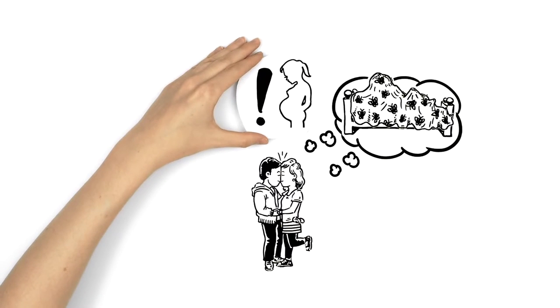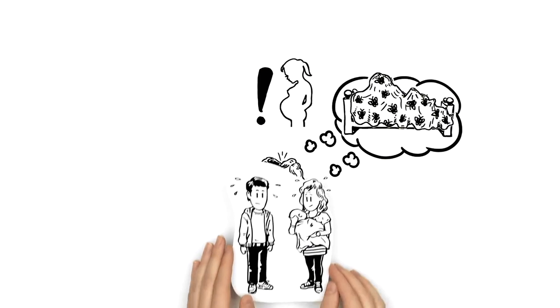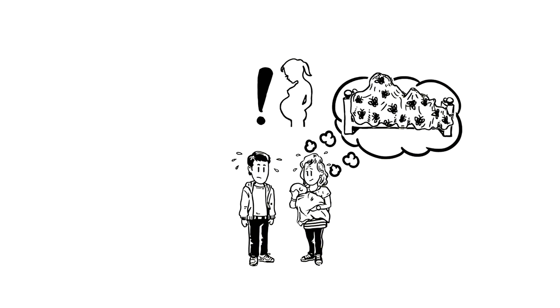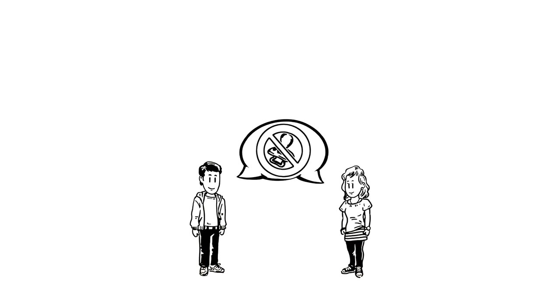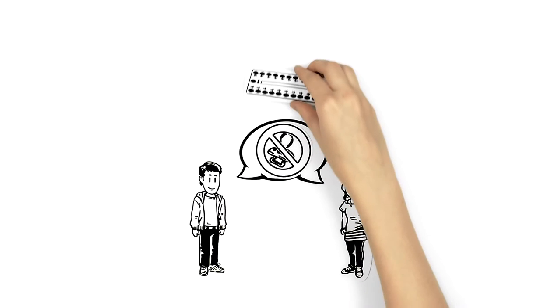Of course they know about the risk of pregnancy, but they consider themselves way too young to have a child. Because of that, talking about contraception before their first time is important.